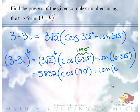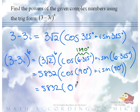Oh, sorry, didn't mean to write that. So, what's the cosine of 90 degrees? Zero. Plus, what's the sine of 90 degrees? One. One times i? 5,832 times 0 plus i? 5,832i.